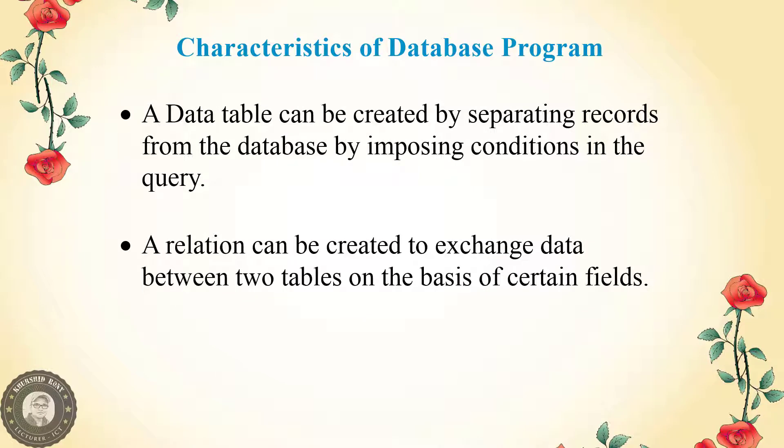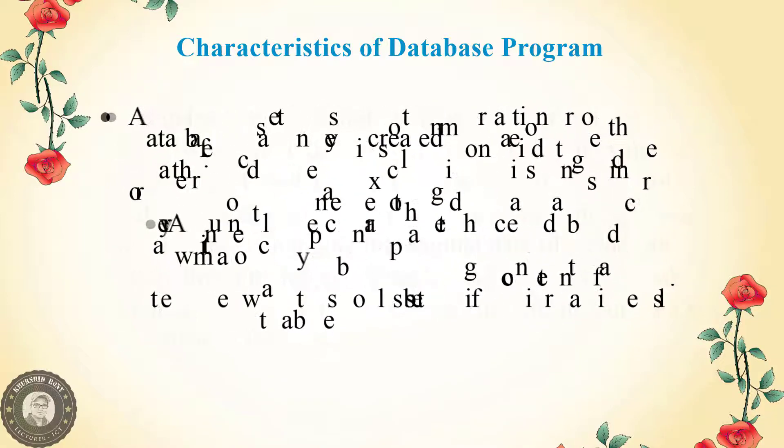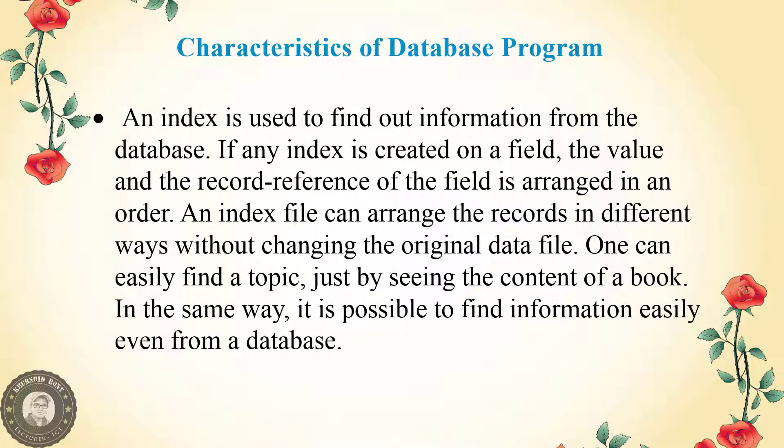A data table can be created by separating records from the database by imposing conditions in a query. A relationship can be created to exchange data between two tables on the basis of certain fields. An index is used to find out information from the database. If any index is created on a field, the value and the record reference of the field is arranged in order. An index file can arrange the records in different ways without changing the original data file.